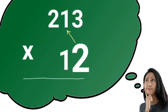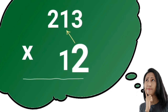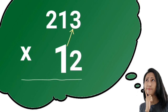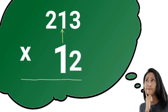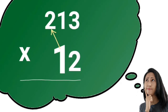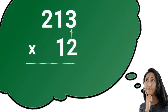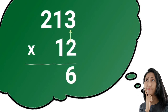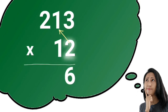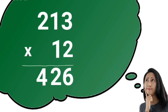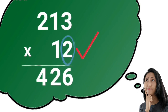Starting from the one's place of the multiplier, then the tenth place. First, second, third. Here, let me show you how. Two times three equals six. Two times one is two. And two times two is four. One's place — done.